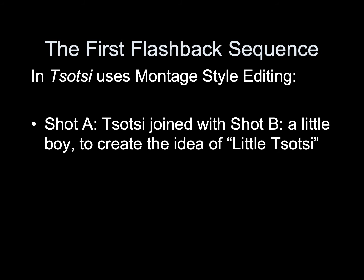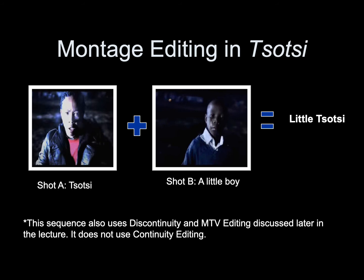The first flashback sequence in Tootsie uses montage-style editing. Shot A — Tootsie — is joined with a shot of a little boy to create the idea of little Tootsie. This sequence also uses discontinuity and MTV editing, discussed later in the lecture. It does not use continuity editing.